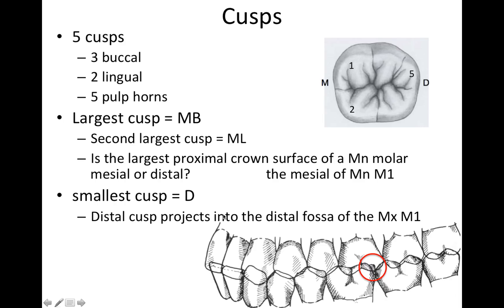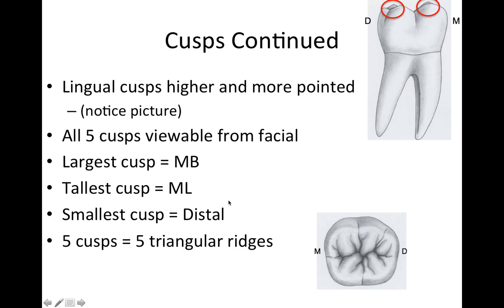The distal cusp is a frequent board topic: it projects into the distal fossa of the maxillary first molar. This is an occlusion concept that comes up frequently on the boards. There will be separate videos focusing specifically on occlusion.